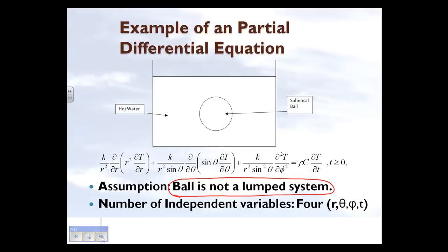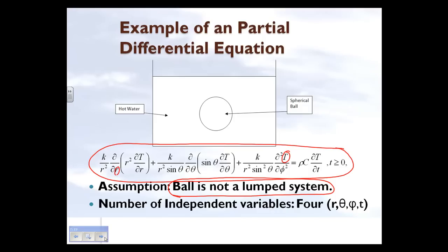What makes a system lumped or otherwise is based on properties such as the thermal conductance of the spherical ball, the convection coefficient between the ball and the water, and the geometry of the ball itself. In the non-lumped case, the temperature T is dependent on four parameters: radial location, angle theta, angle phi, and time. With four independent variables, the differential equation becomes a partial differential equation.